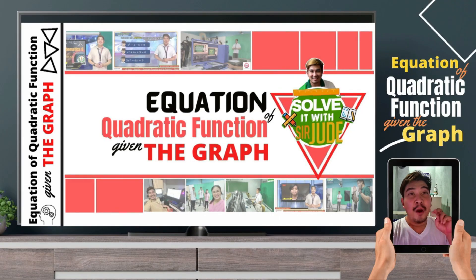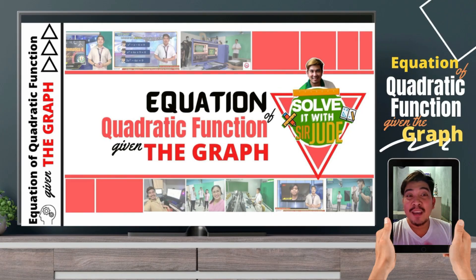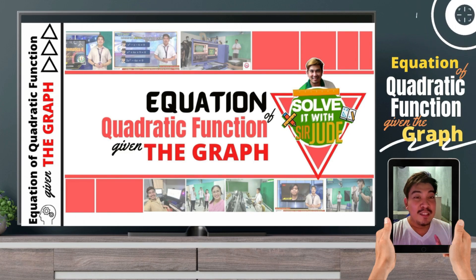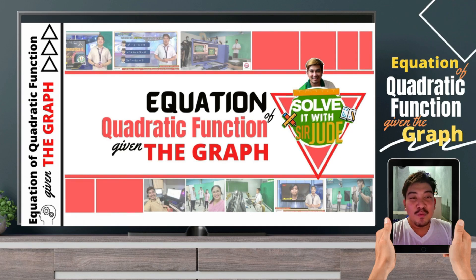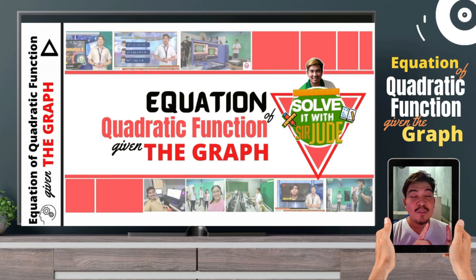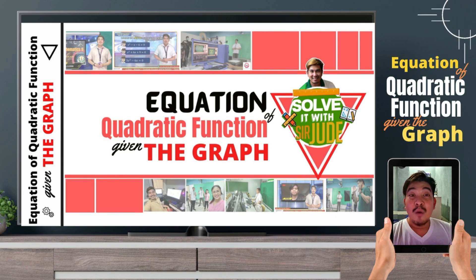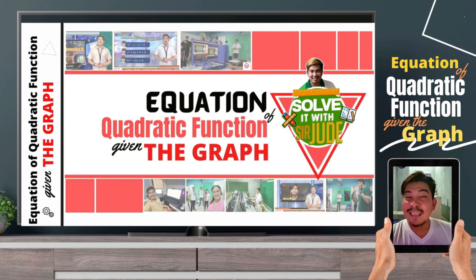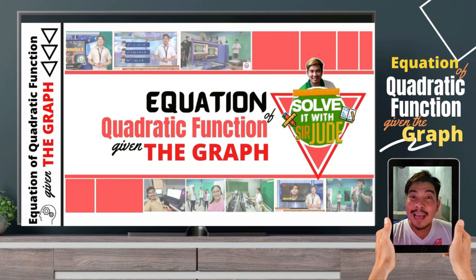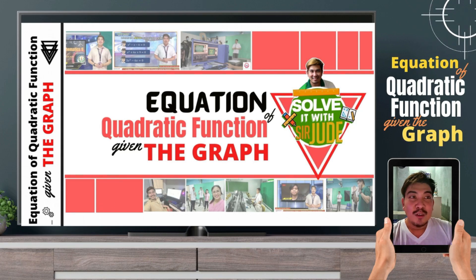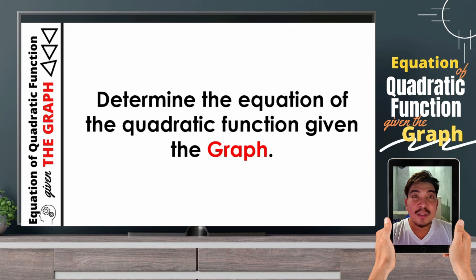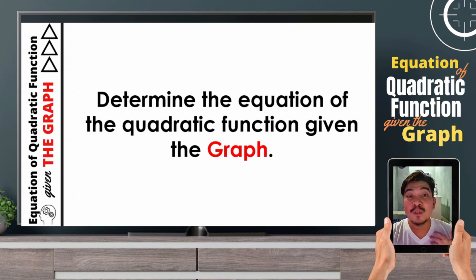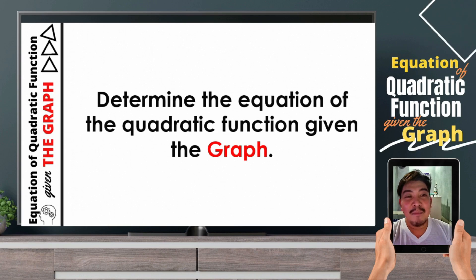Hi! Welcome back to our part 2 in discussing finding the equation of a quadratic function. In this video lesson, we are given with the graph. So, how are we going to find the equation of the quadratic function given the graph? This video lesson is related to our first video lesson regarding finding the equation of a quadratic function given the table of values. So, let us start. If we are to determine the equation of the quadratic function given the graph, we need to follow some steps. Let us have some examples.